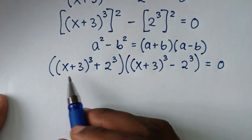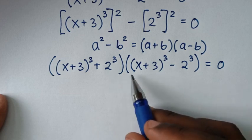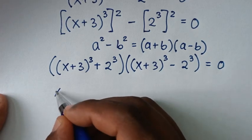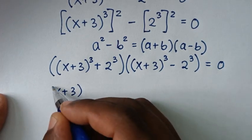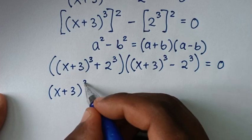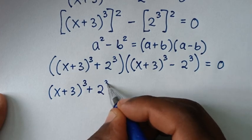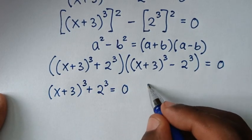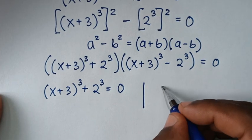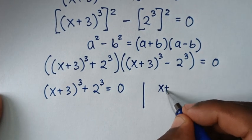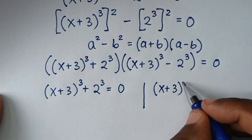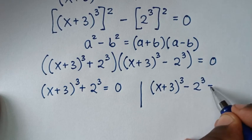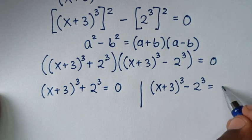From here we have two solutions. The first solution is (x + 3)^3 + 2^3 = 0, and the second solution is (x + 3)^3 − 2^3 = 0.